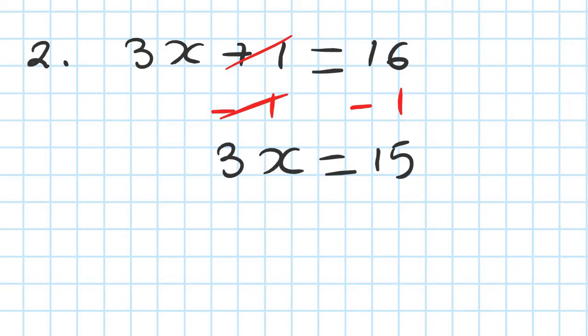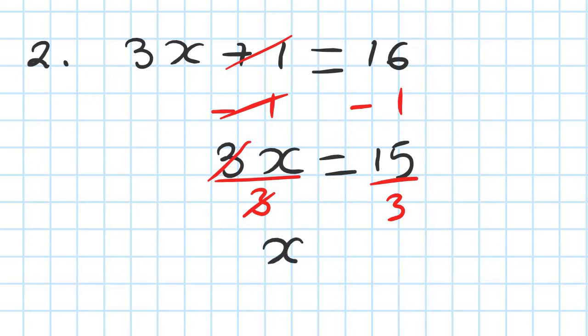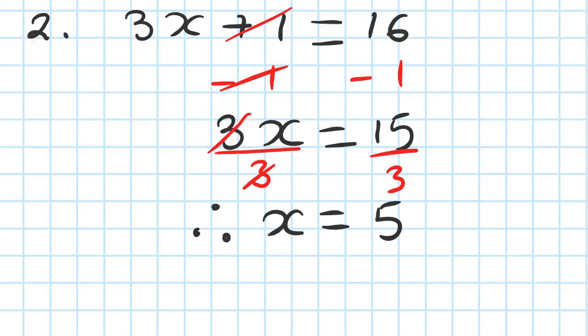So 16 minus 1 is 15, giving you 3x equals 15. Now 3 times something is 15, so x must be 5. To get rid of the 3, I divide both sides by 3. That cancels out, so therefore x is equal to 5.